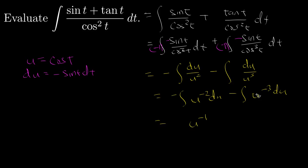And then over here I'll add 1 to the negative 3 to get u to the negative 2, multiply by the reciprocal, which is going to be negative 1 half,